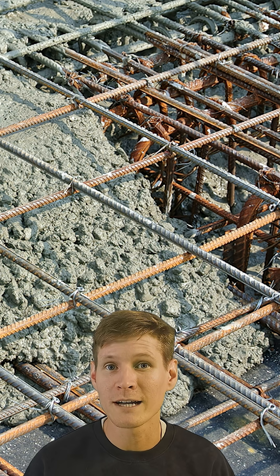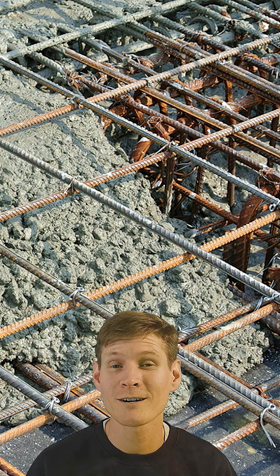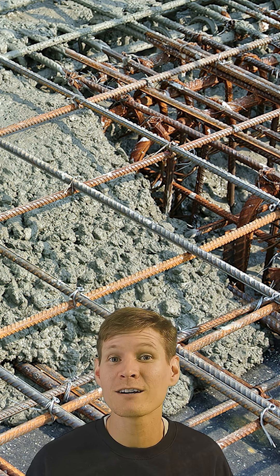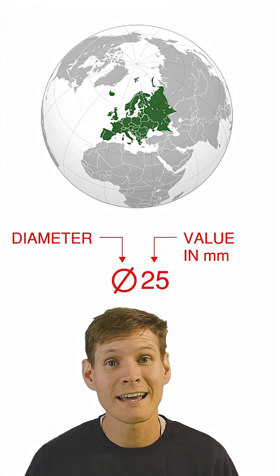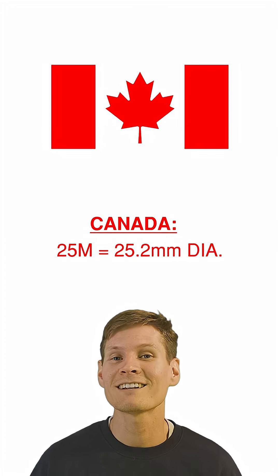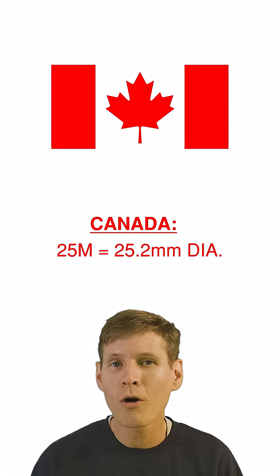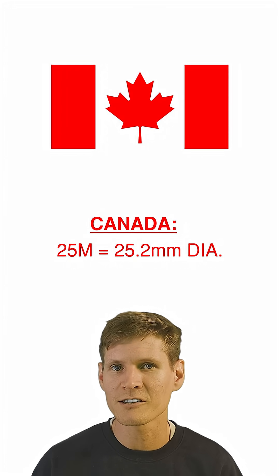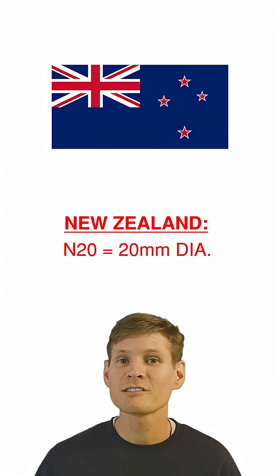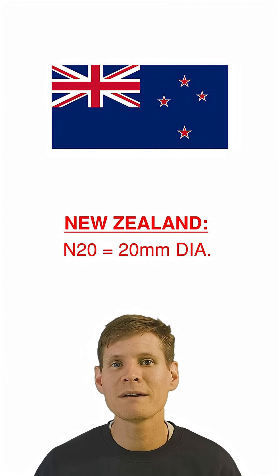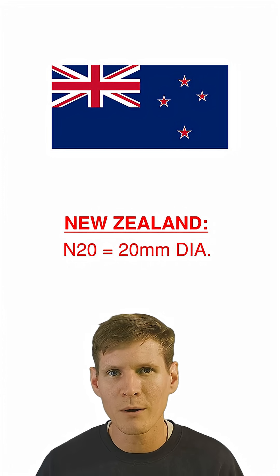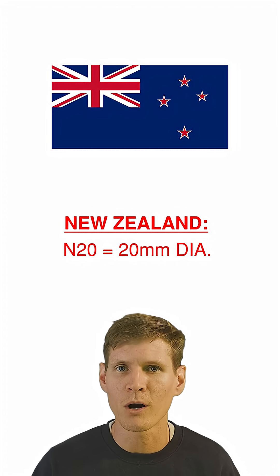Most of the world keeps it simple and just calls rebar based on its diameter in millimeters. But how they write that down on paper varies slightly across the globe. In Europe, you likely see a diameter symbol followed by the number in millimeters. In Canada, they use M, standing for metric, and their sizes are almost the diameter in millimeters but can vary slightly. In Japan, they use a capital D, standing for diameter. And places like Australia and New Zealand use N, meaning normal ductility steel, which is really more about the material composition, with the number afterwards being the diameter of the bar.